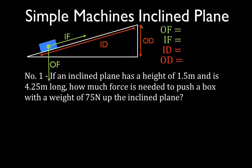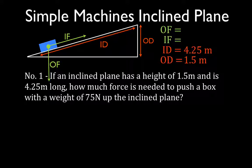If an incline plane has a height of 1.5 meters, the height of the incline plane is the output distance, so I'm going to put down that 1.5 is the output distance. The ramp is 4.25 meters long — that's the input distance. The weight of the object is 75 newtons, which is the output force. So I have three of those things filled in; I need to know the input force.